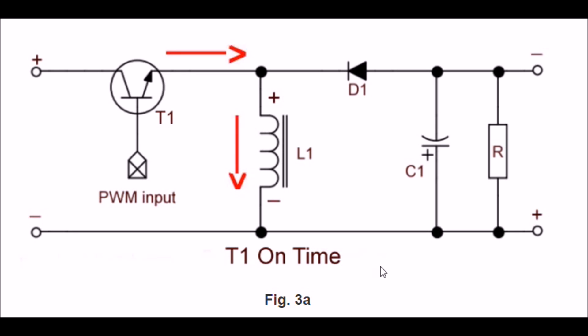Now we come to our third basic configuration known as buck-boost inverting. Note how I've changed the positions of L1, D1, T1. And you notice I've turned polarity-wise the capacitor upside down. When I switch T1 on, current flows through T1 through L1 to ground. Again, this induces a magnetic field surrounding L1. D1 at this point, the diode is turned off.